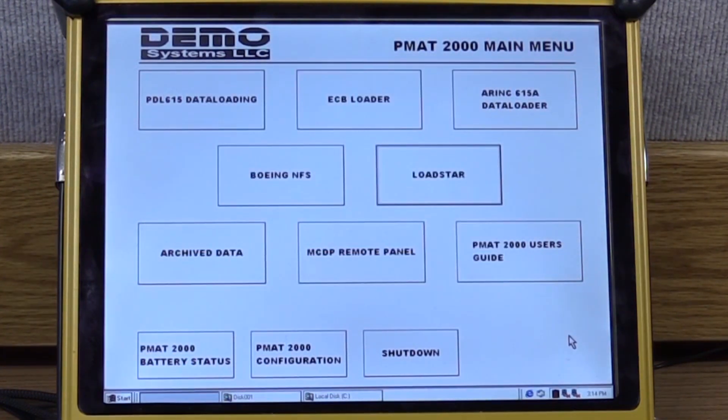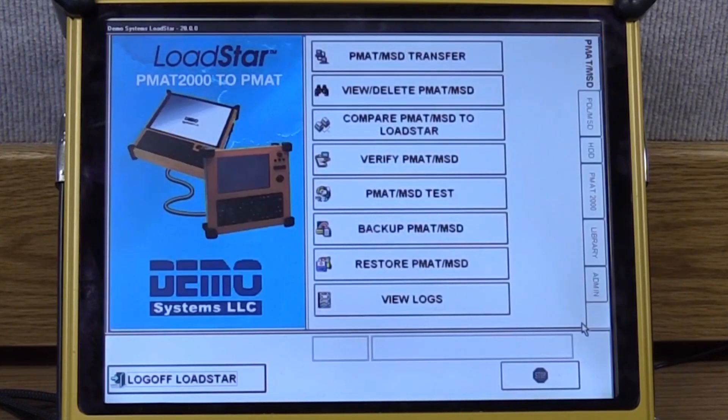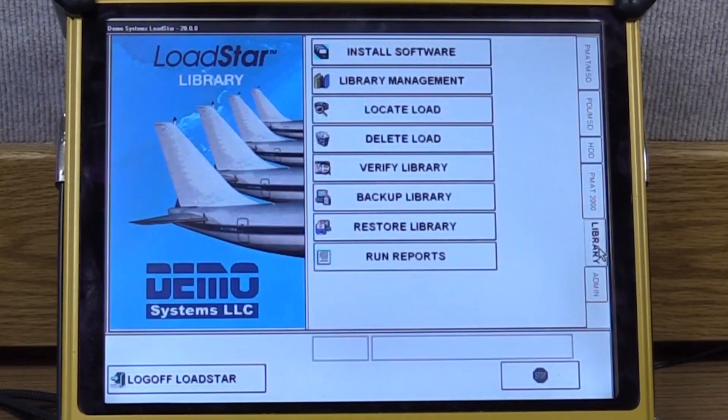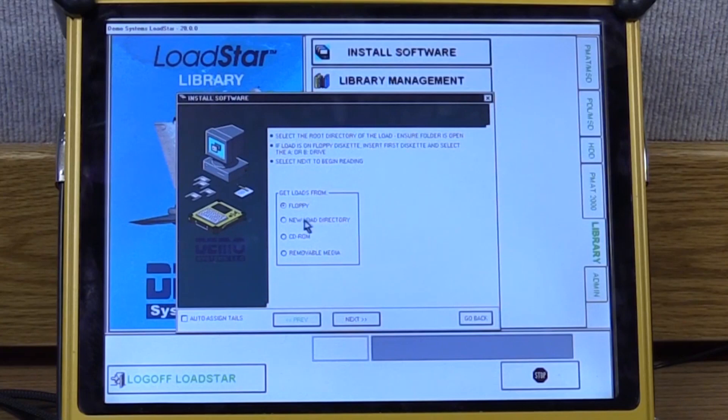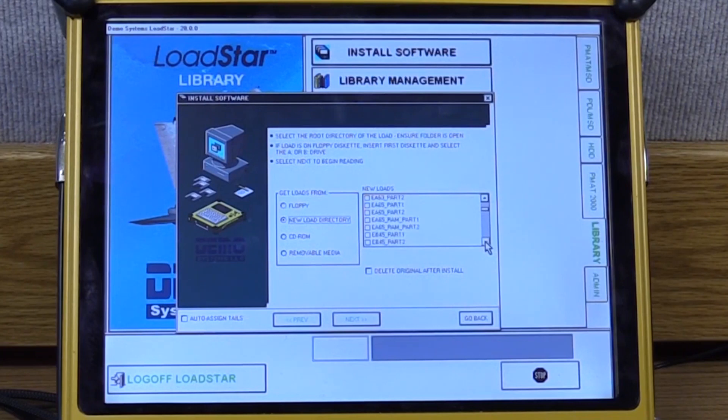Once you confirm that the config.ldr file is in the correct directory location you'll need to go to load star, select the library tab on the right and then select the install software. Here you'll select new load directory and then in the new loads you need to scroll down until you find EMU DLFF data.